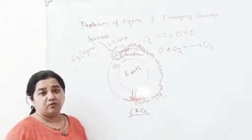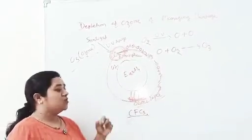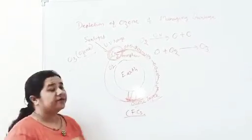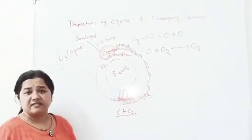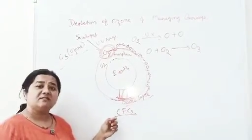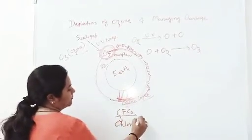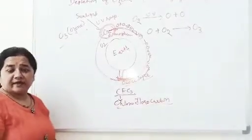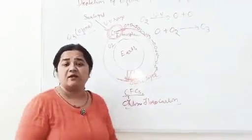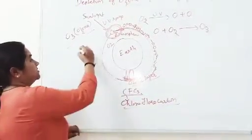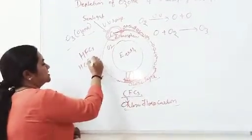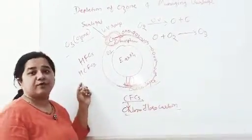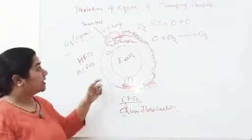Because of CFC gas, the ozone layer depletes and ultraviolet rays are no longer blocked — the protective shield weakens. CFC — its full form is Chlorofluorocarbon. CFC gas has been banned from use in refrigerators and air conditioners. Instead, we now use HCFC — that is, Hydrochlorofluorocarbons — and HFCs — Hydrofluorocarbons.